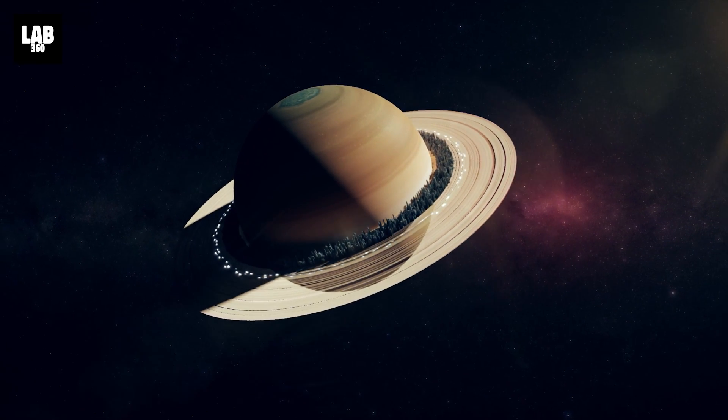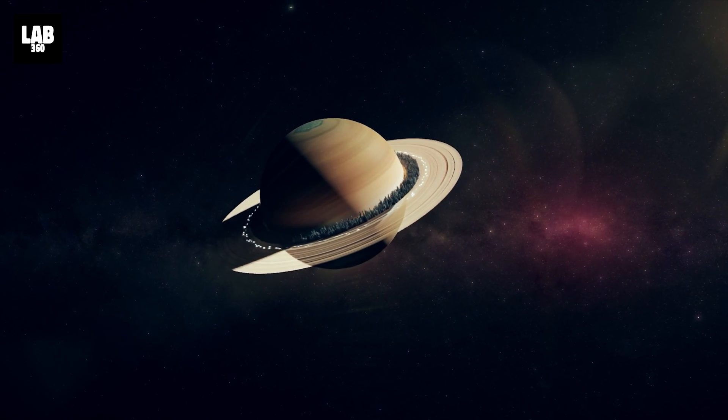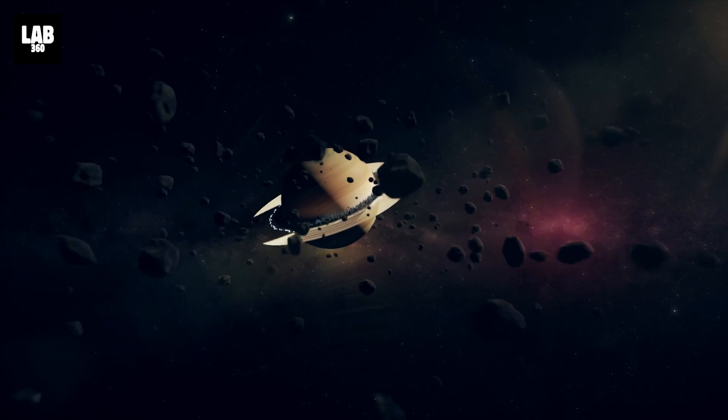As we saw earlier, the rings, which are made of ice particles, rocks and dust, are captured by the planet's gravitational pull, forming an orbital path around it.